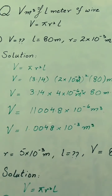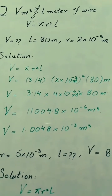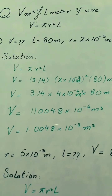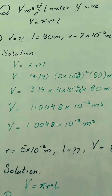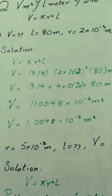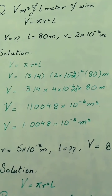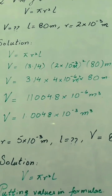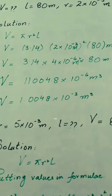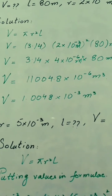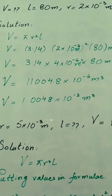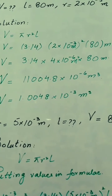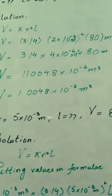Now look at another question in which we have to find the volume of a wire of length l meters. The formula for volume is V = πr²l. For this part, l is given as 80 meters and r is given as 2×10⁻³ meters. Putting values into the formula: V = 3.14 × (2×10⁻³)² × 80. Solving gives V = 3.14 × 4×10⁻⁶ × 80.